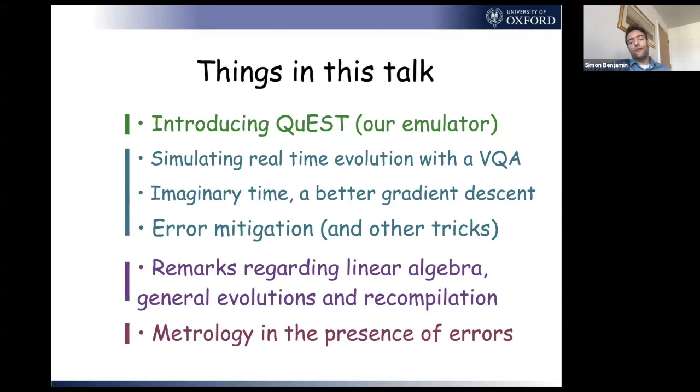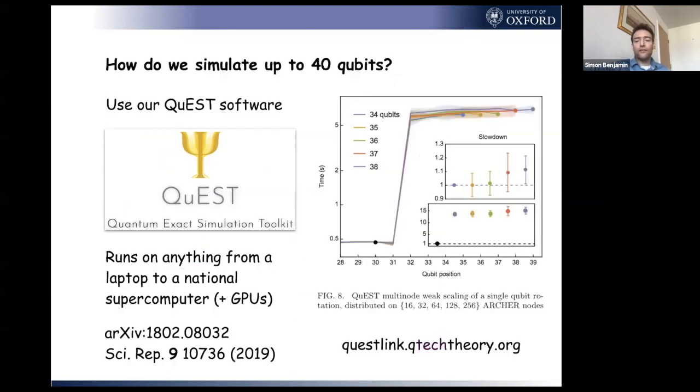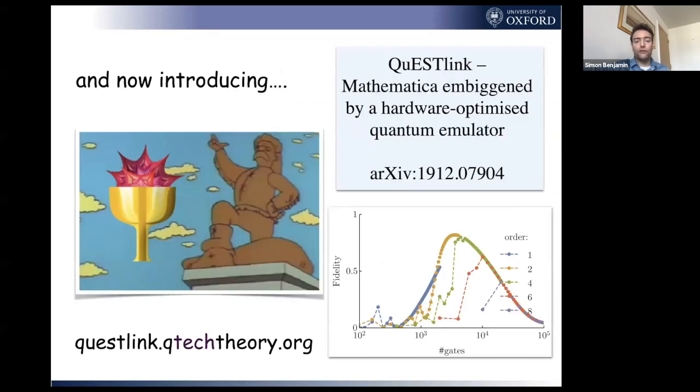Here's a list of things. This slide has a lot on it, but I just want to throw out there that many of the numerical calculations I'll show you were done with a tool set that my group developed called Quest. It's open source and many people contribute. You can find out about it at questlink.qtechtheory.org. That's the slightly fancier version, which is an extension to Mathematica. All you need to do is copy and paste one line of text at the top of your Mathematica workspace.